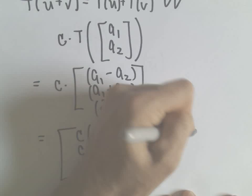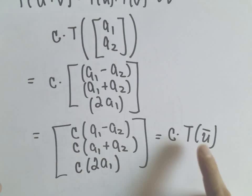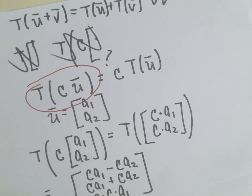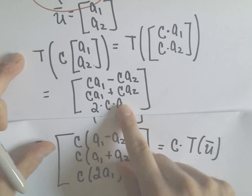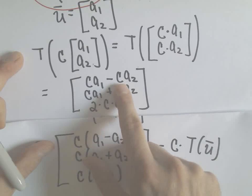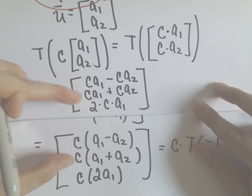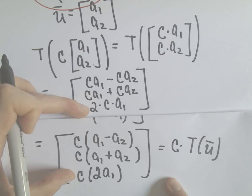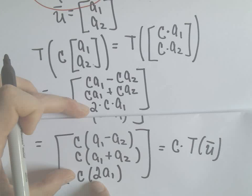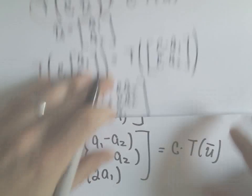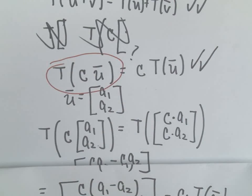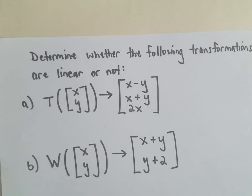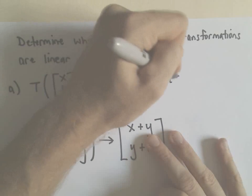This is an expression for the right hand side, applying the transformation and multiplying it by the scalar. Let's see if we get the same thing as what we had before. If we distribute we'll get CA1 minus CA2 so the first lines agree. We'll get CA1 plus CA2 so those also agree, and 2CA1 is the same thing as C times 2 times a sub 1. In fact, the second condition is also satisfied, and we have now justified that yes, this first transformation is linear.